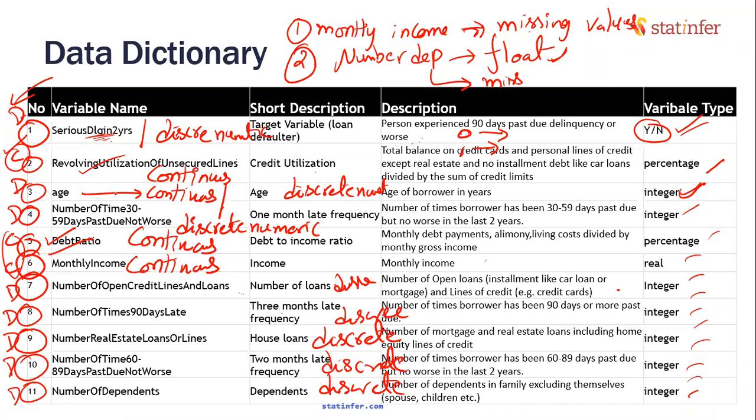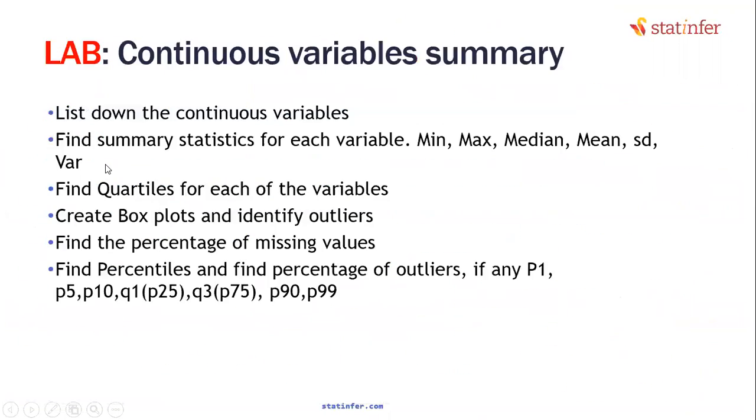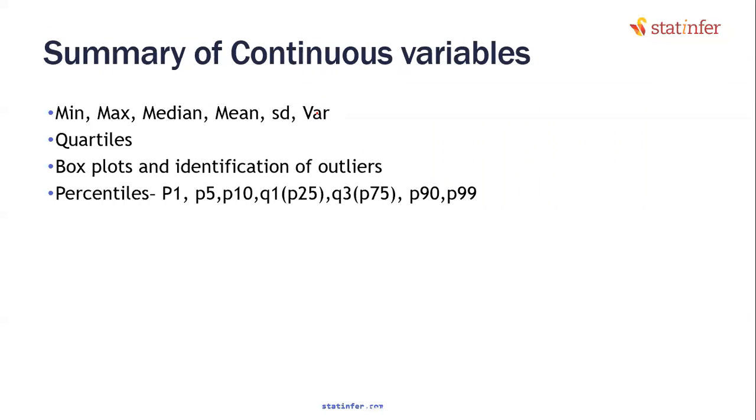Good variables: utilization, debt ratio, monthly income. These are key indicators. Yes or no? We have to do the continuous variables summary. How do you get the continuous variable summary? Very simple.